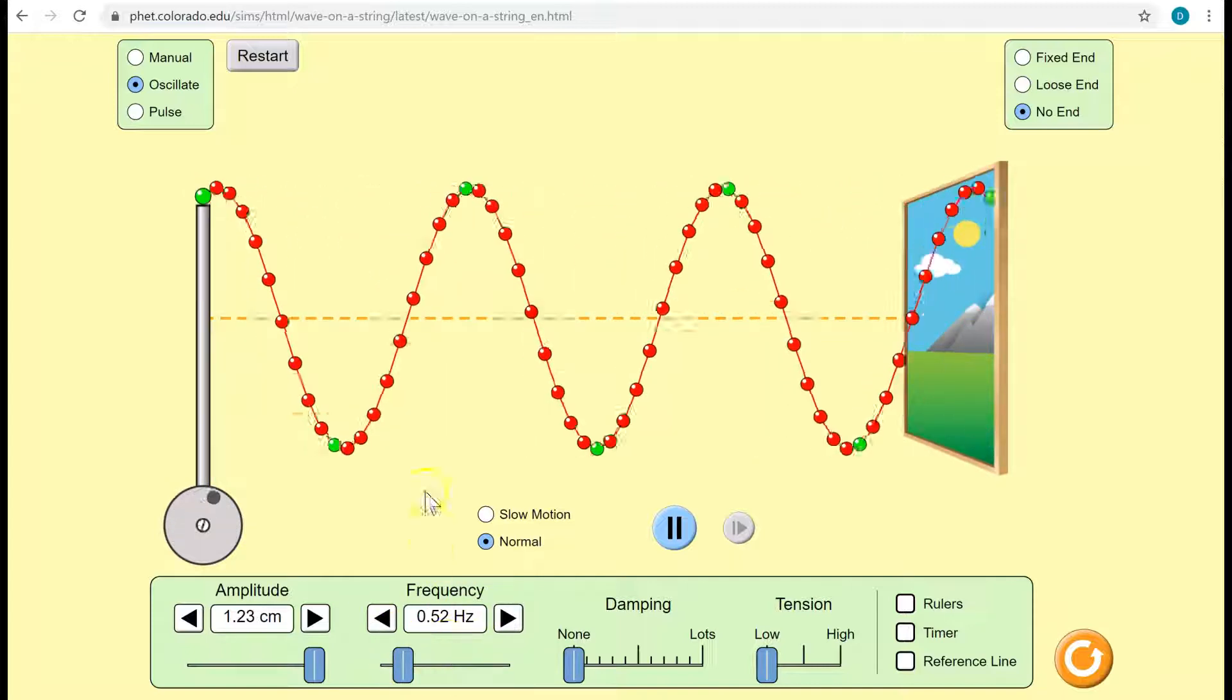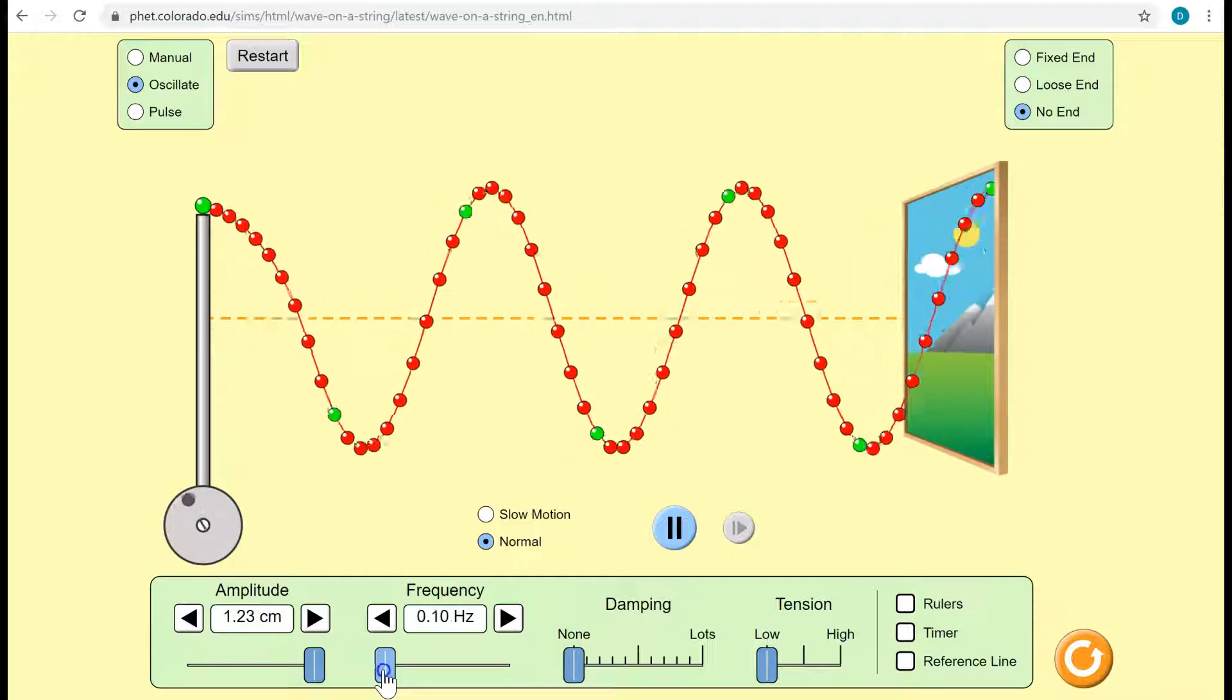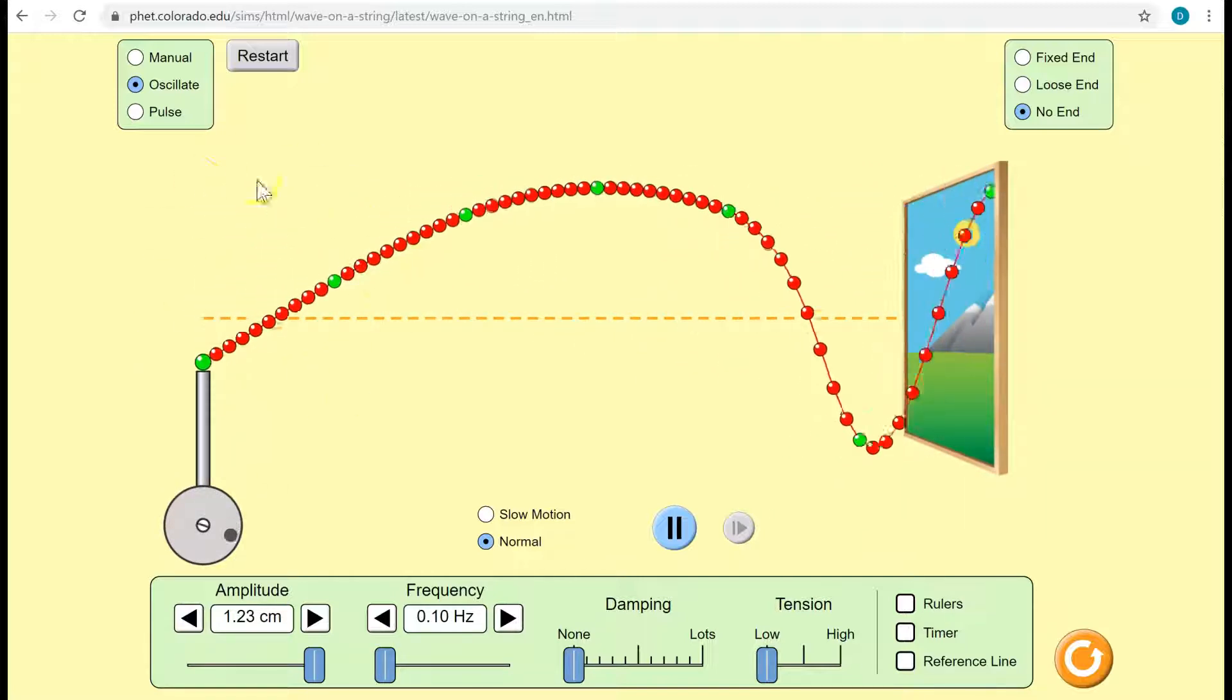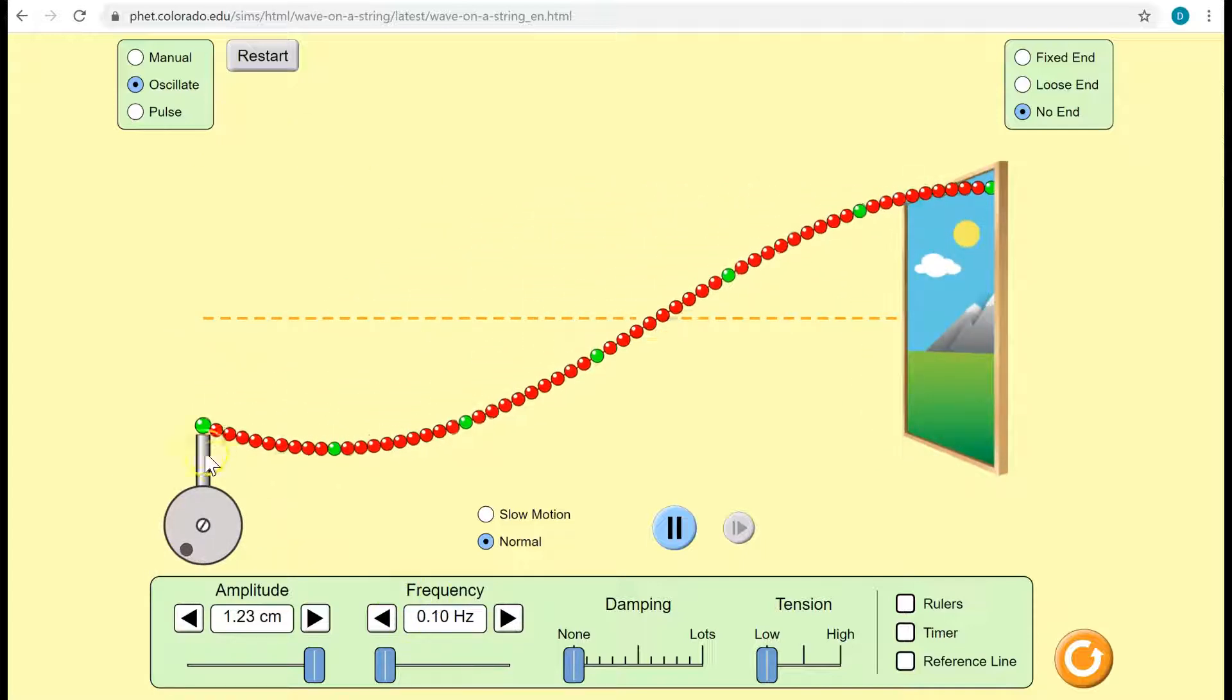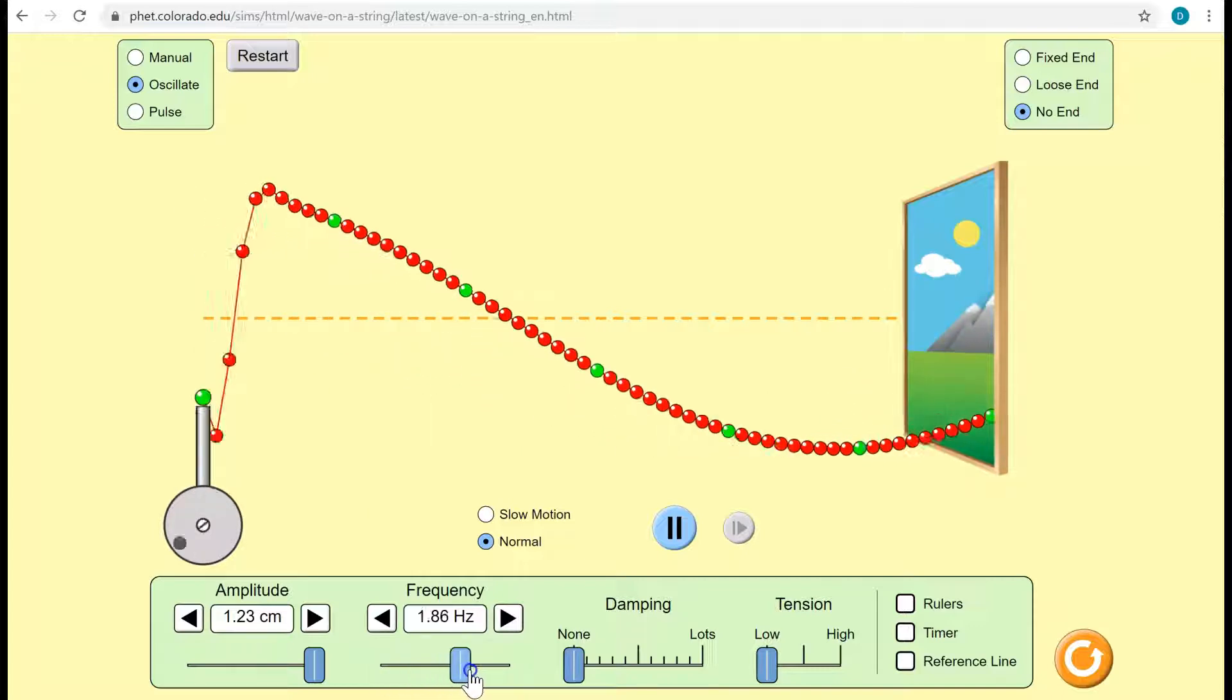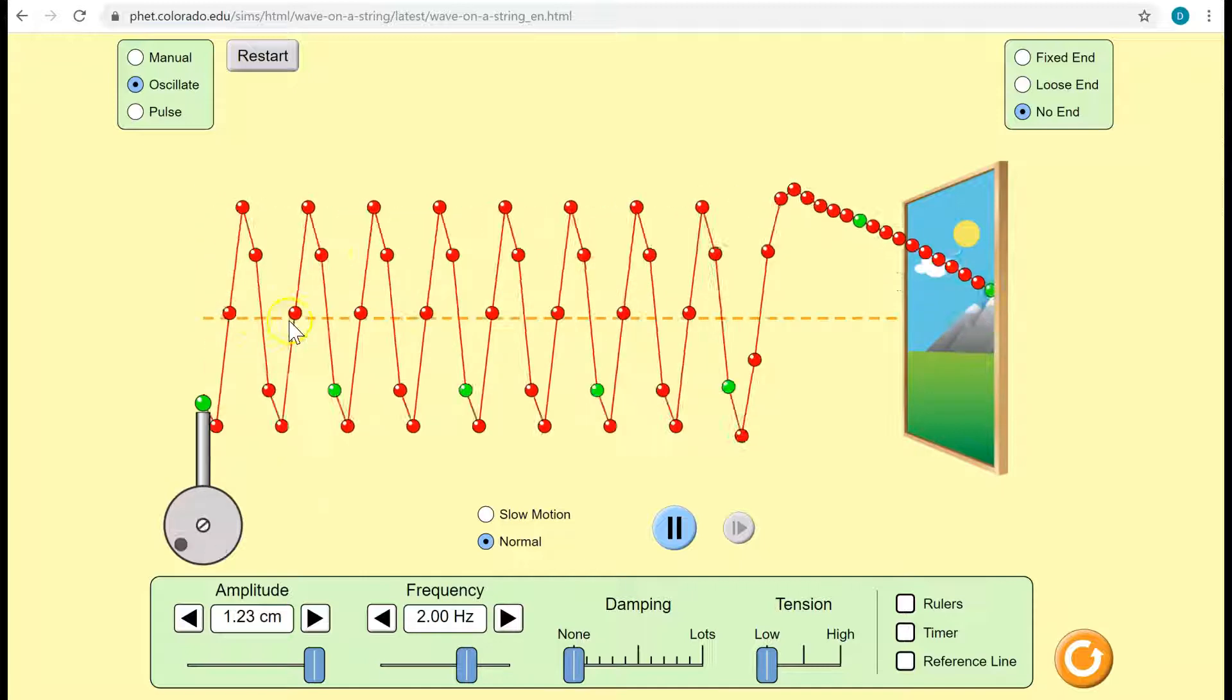Frequency we can think of in a wave this way. Frequency is how many waves are produced per second. A low frequency means the source produces a low number of waves per second. A high frequency means the source produces a large number of waves per second.